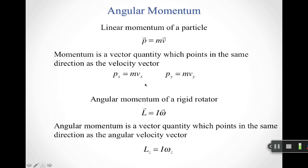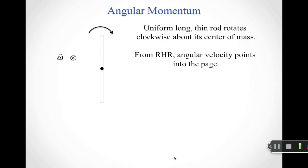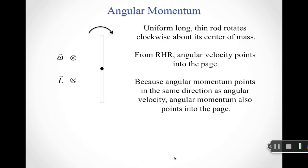If we have objects moving in the x-y plane, we're interested in angular velocity in the z-direction. As a vector quantity, we focus on the z-component and must be consistent with signs. For example, a uniform thin rod rotating clockwise about its center of mass — by the right-hand rule, curling fingers clockwise means the thumb points into the page, so the angular velocity points into the page. Therefore the angular momentum also points into the page.